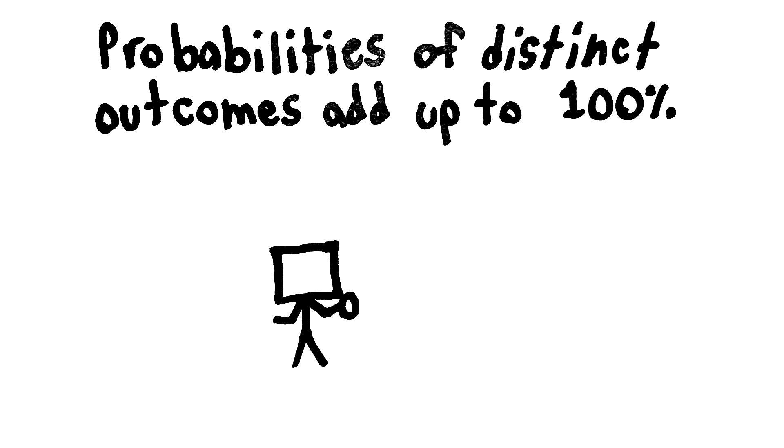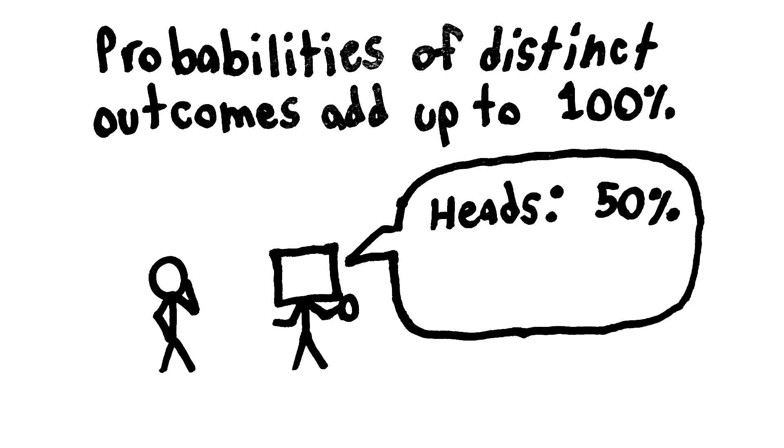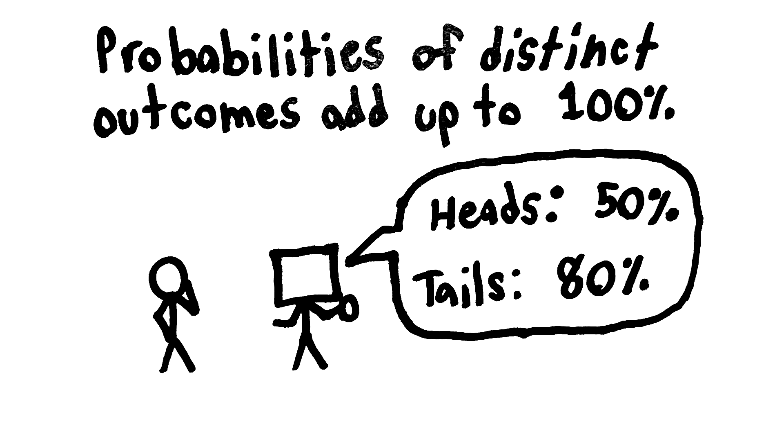For example, imagine I were going to flip a coin, and I told you, this coin is special. There's a 50% chance it will land on heads, and an 80% chance the coin will land on tails.